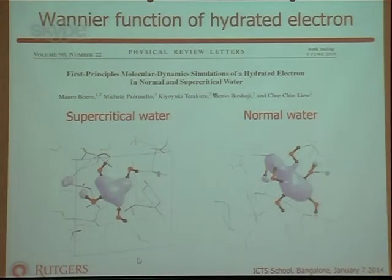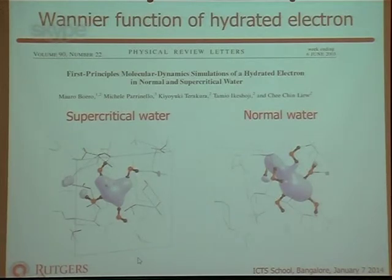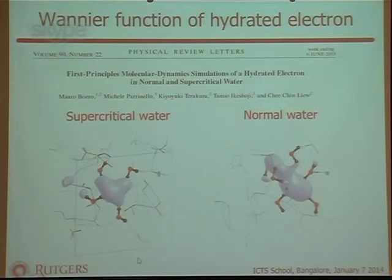A hydrated electron is a system where you take water molecules and add one extra electron, which forms a kind of cavity where the surrounding water molecules avoid the electron. There is a Wannier function associated with this hydrated electron — shown here for supercritical water and for normal water.